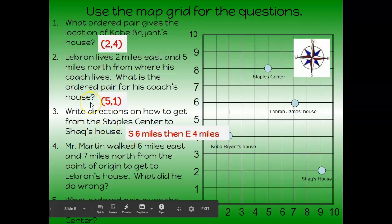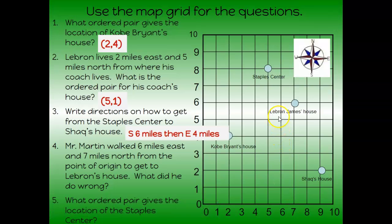All right, Mr. Martin walked six miles east and seven miles north from the point of origin to get to LeBron's house. What did he do wrong? Well, the point of origin is zero, zero. We know that. So Mr. Martin started down here at zero, zero, and he walked six miles east, which is this way, and seven miles north. Oh, he's not at LeBron's house. What did he do wrong?